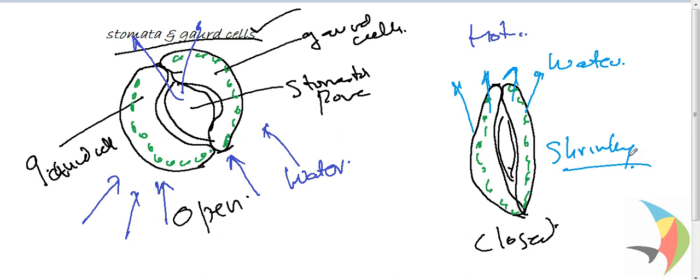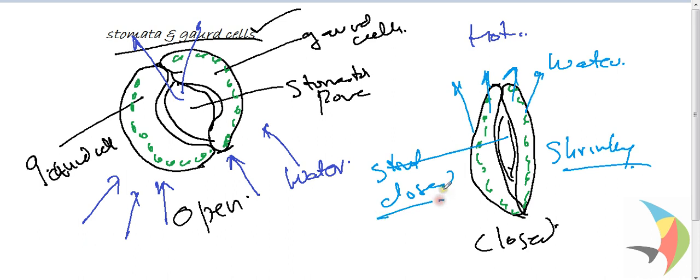So the plants, by the action of this atmospheric condition, close the pores. And when it does not require much carbon dioxide for photosynthesis, this condition takes place and the stomatal pores are closed. This is how the opening and closing of the guard cells takes place in stomata. In the further sessions, we will discuss more about the leaves and the various aspects of the leaf structure. Thank you.